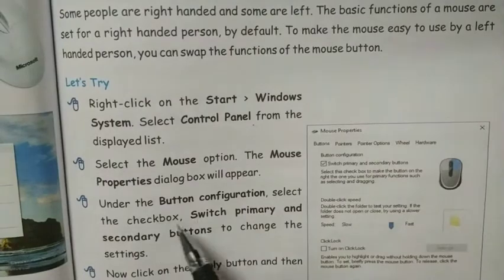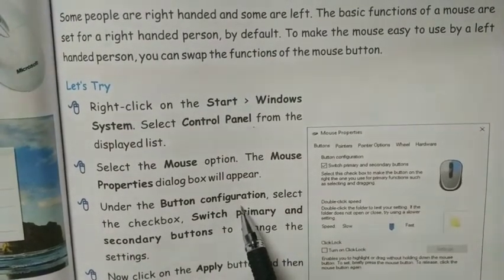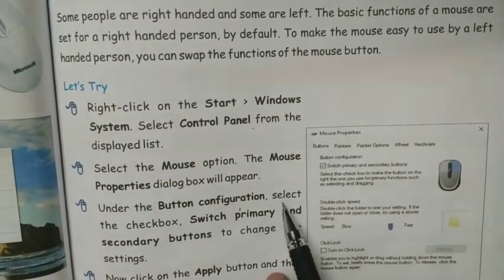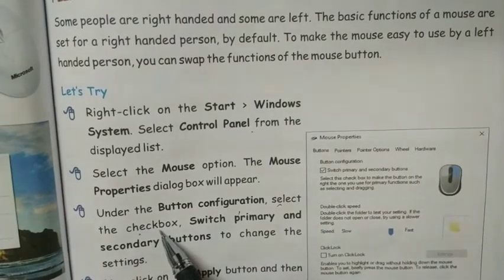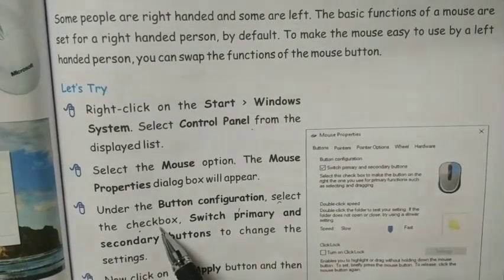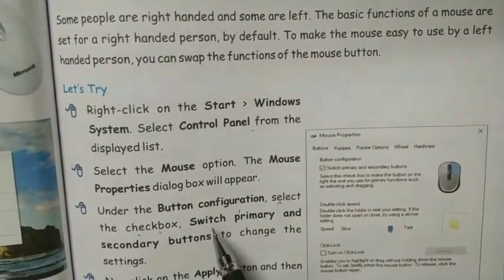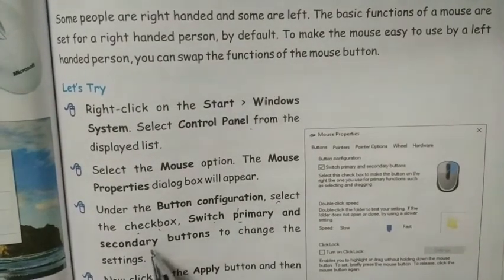After that under the button configuration, select the checkbox. There is a checkbox given. You have to select it: Switch primary and secondary button.